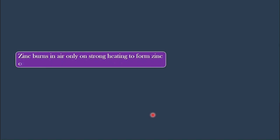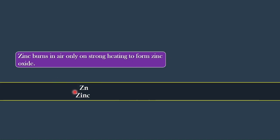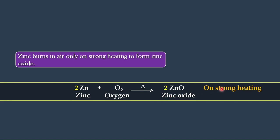The next reaction: zinc burns in air only on strong heating to form zinc oxide. The chemical equation is: zinc plus oxygen on strong heating gives zinc oxide. This is the balanced chemical equation.